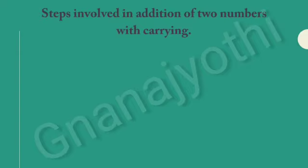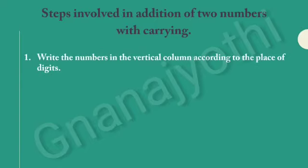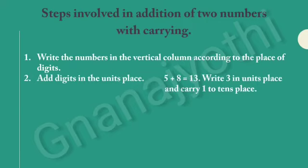Now, let us learn what are the steps involved in addition of 2 numbers with Kari. Step 1: Write the numbers in the vertical column according to the place of digits. Step 2: Add digits in the units place. In the question, the digits in the units place are 5 and 8. So, if we add these, we get 13.